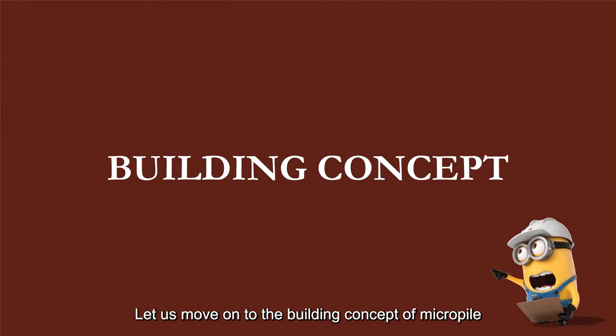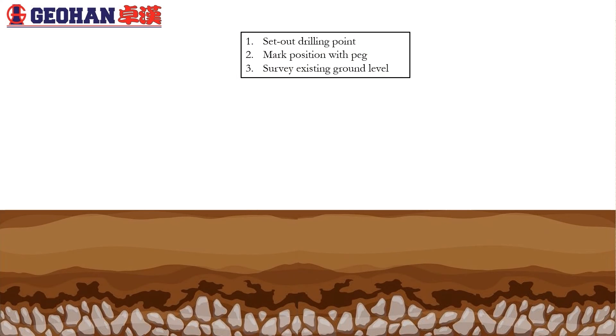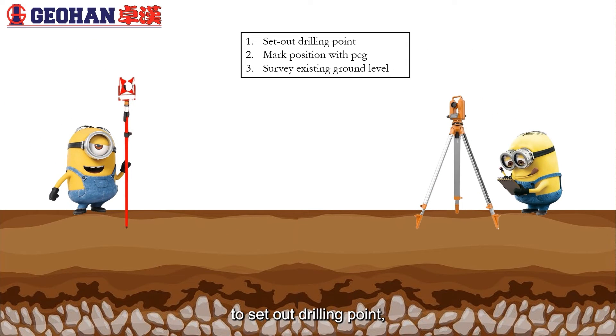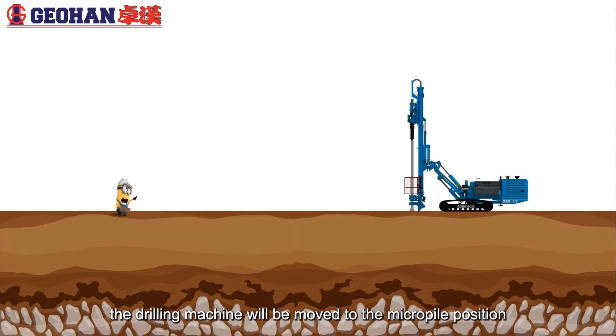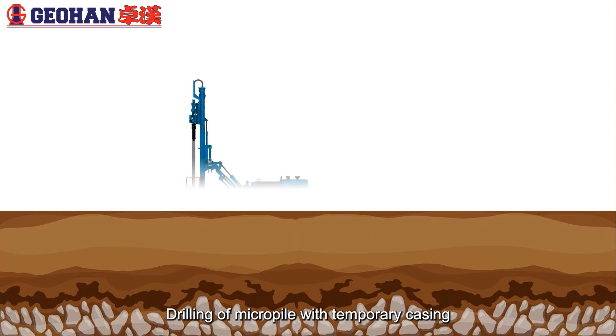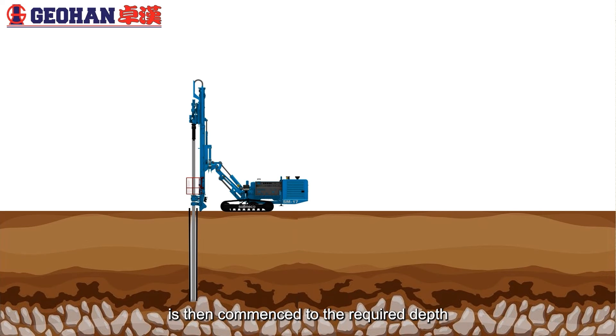Let us move on to the building concept of micropile. At first, surveying work will be carried out by surveyor and chainman to set out drilling point and survey existing ground level. After that, a drilling machine will be moved to the micropile position. Banksmen will check the verticality of drilling rod placed directly above the pile point. Drilling of micropile with temporary casing is then commenced to the required depth.